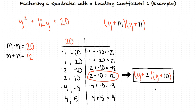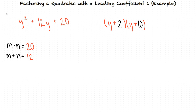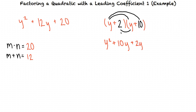We can check our work to make sure that 2 and 10 are the right numbers for m and n by multiplying the factors back out. Using the FOIL method, we multiply y times y to get y squared, then we multiply y times 10 to get 10y. Now we multiply 2 times y to get 2y, and we multiply 2 times 10 to get 20.